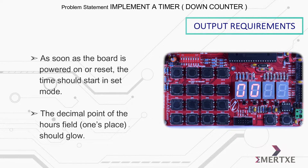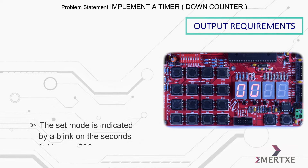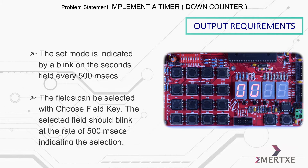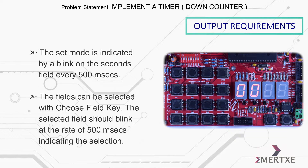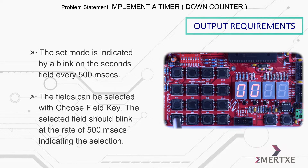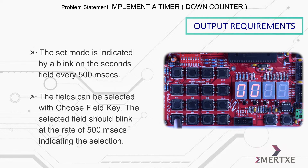As soon as the board is powered on or reset, the timer should start in set mode. The decimal point of the hours field should glow. The set mode is indicated by a blink on the seconds field every 500 milliseconds.